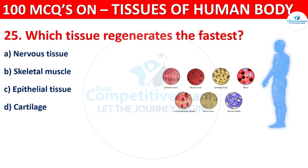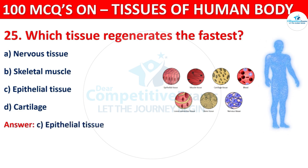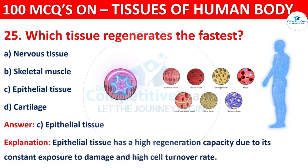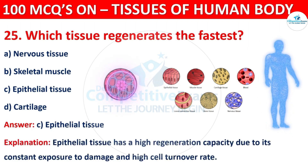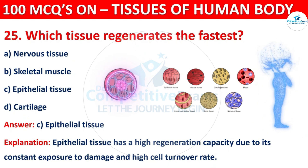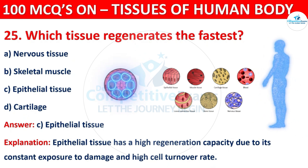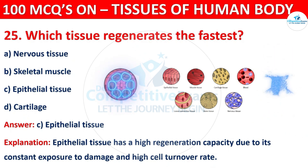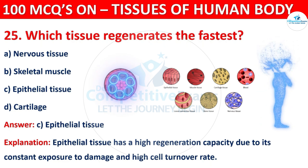The correct answer is C, i.e. Epithelial Tissue. Epithelial Tissue has a high regeneration capacity due to its constant exposure to damage and high cell turnover rate.